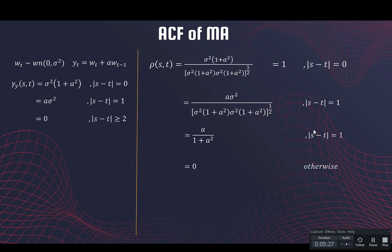If the distance between the time points is zero, the autocorrelation is one — obviously the correlation of x_t with itself. If the distance is one, this is the autocorrelation expression, and otherwise it is zero. You can see that as the distance increases, the correlation is decreasing.